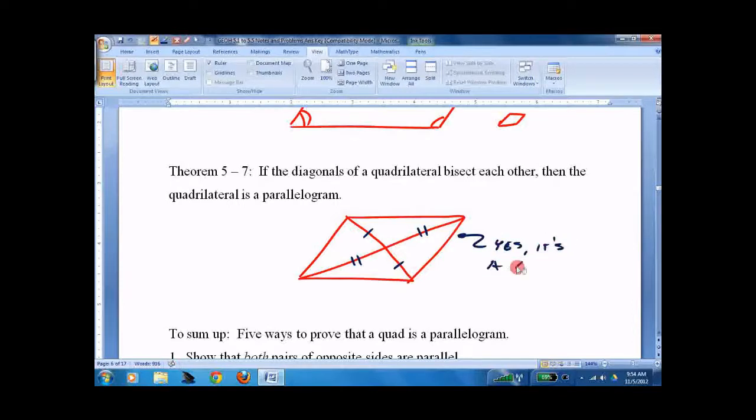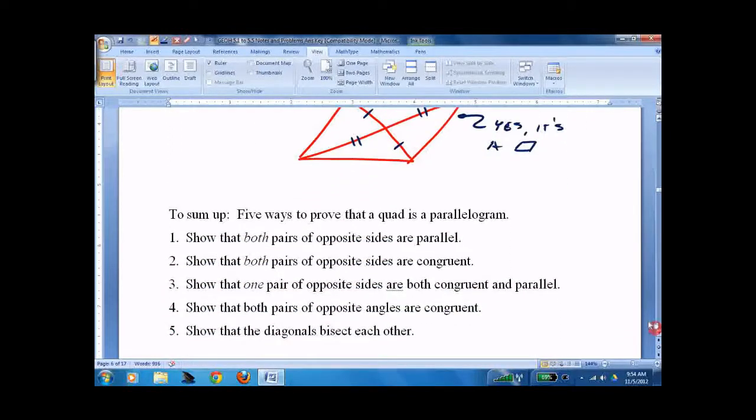Where's the fifth one come from? Well, the fifth one's pretty obvious. It's the definition. It's the first one. If you have two pairs of parallel lines. Obviously, it's a parallelogram. And the other four we just did.